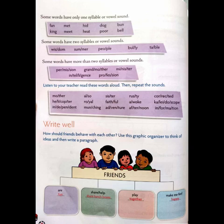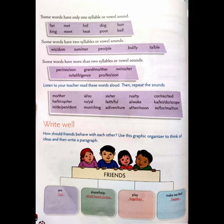In this page, if you see the first part, the first words have only one syllable: fan, met, hid, dog and bun. Fan is an object. Met is the past tense of meet. Hid is the past tense of hide. Dog is a noun and bun is also a noun. Now these words have only one vowel. The next word, kink, again has one vowel.